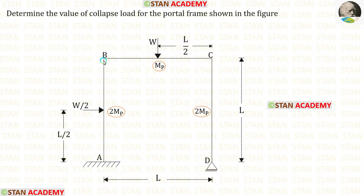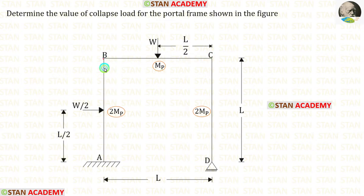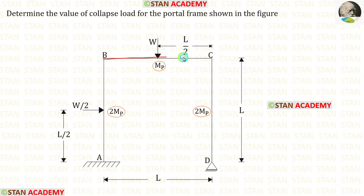In this frame we have the columns AB and CD and the beam BC. In column AB we have a point load W/2 acting in the center. In beam BC we have a point load W, also acting in the center.